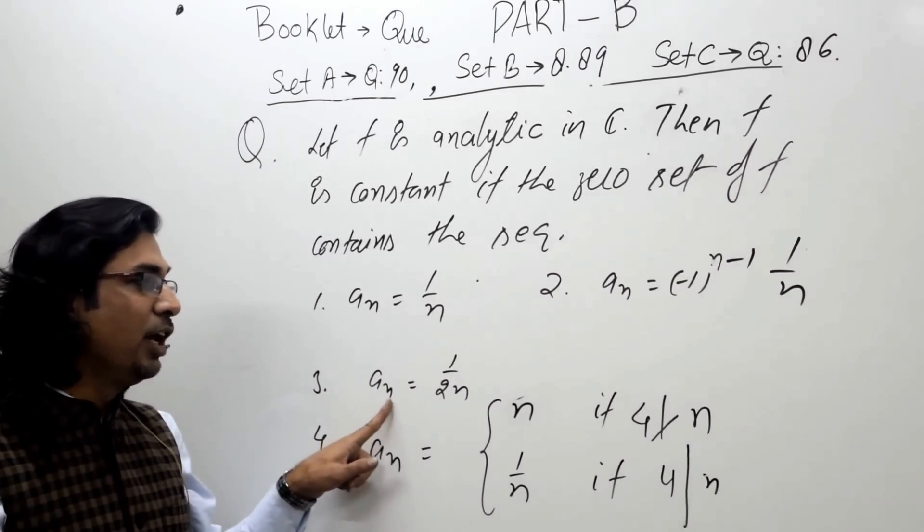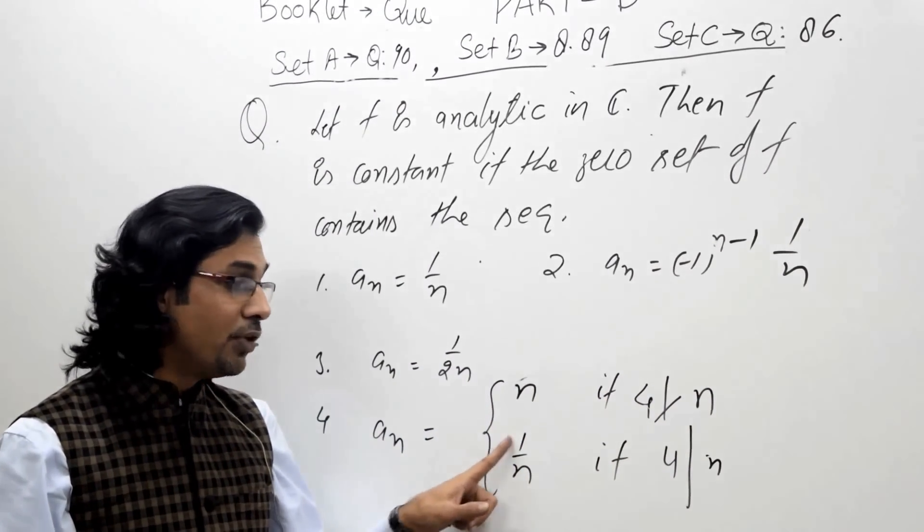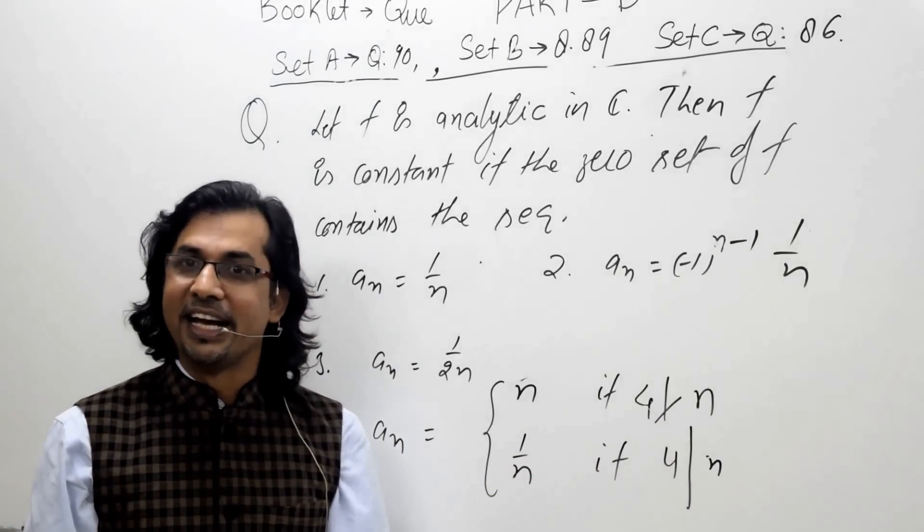Third option: a_n = 1/(2n). And fourth: a_n = n when 4 doesn't divide n, and 1/n if 4 divides n.